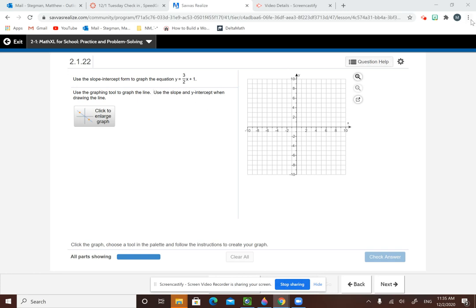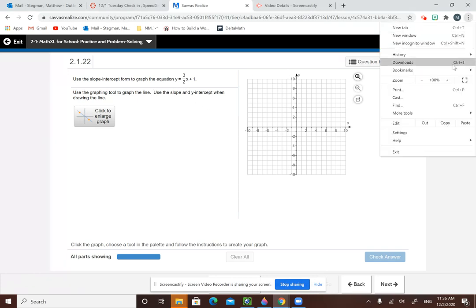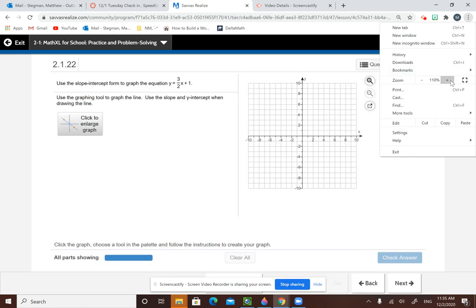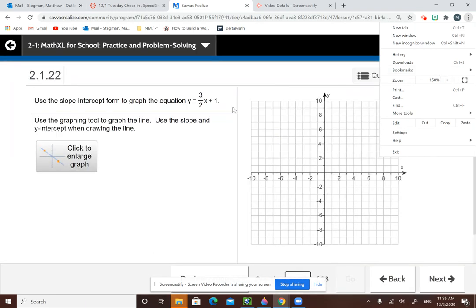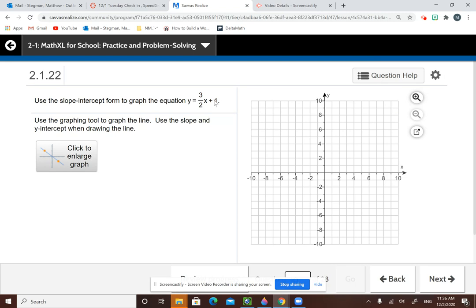This is to use the slope-intercept form to graph the equation y equals 3 over 2x plus 1. When we are graphing, there are two key things that you need.